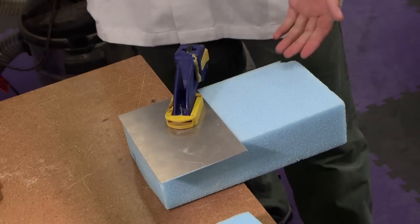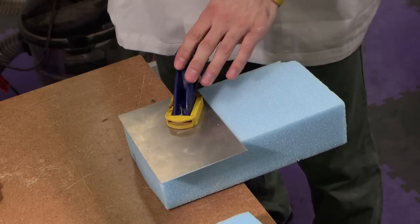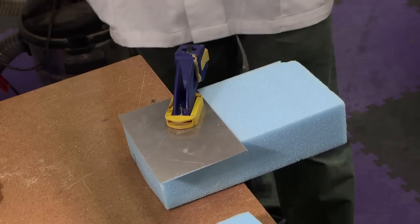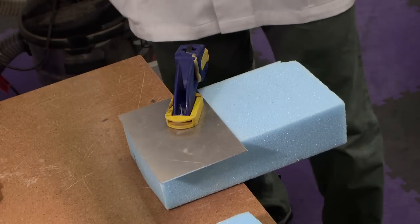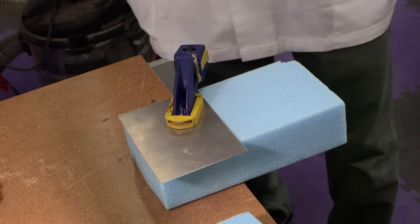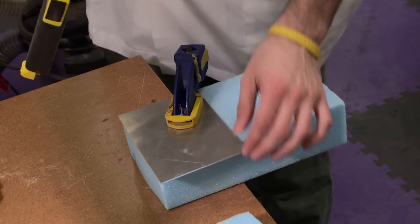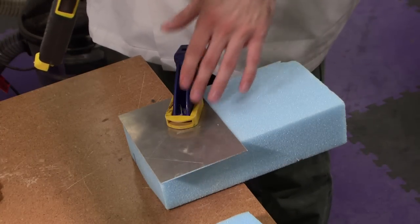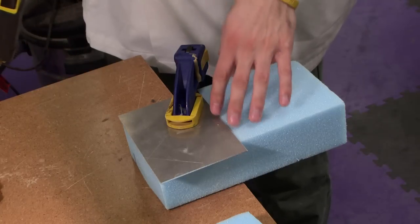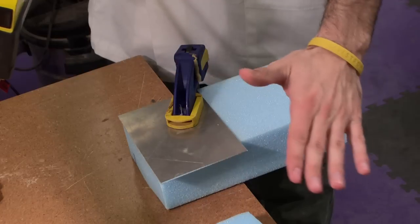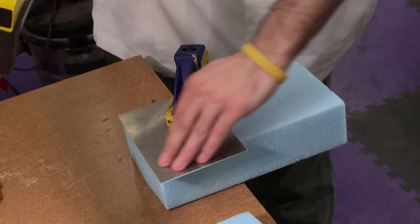You can see over here that the work piece is fixed to the table with a clamp. You always want to fix your work piece when you're using a hacksaw, that way the piece doesn't move around while you're doing your cutting. There's also a small piece of sheet metal in between the foam and the clamp to make sure the clamp doesn't damage the blue foam. It distributes the clamping force along a bigger surface area.